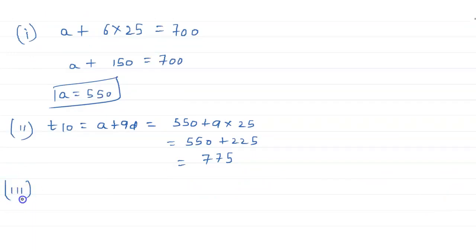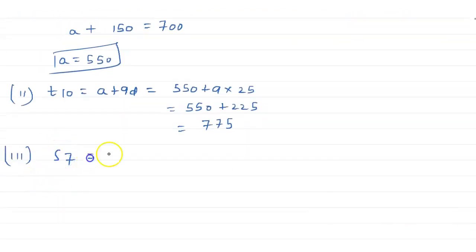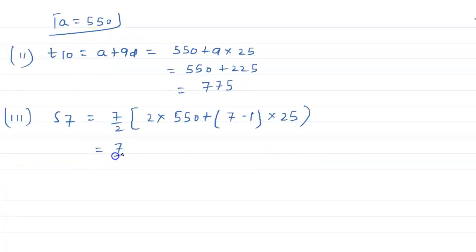So now the third part is we have to find the total production in seven years. So simply we have to find s7, that is sum of the first seven years. This will be 7 by 2, 2 into a is 550 plus 7 minus 1 into d, d is 25. So this will be equals to 7 by 2, 550 into 2 is 1100 plus 150, equals to 7 by 2 times 1250 and the value will be 4375.